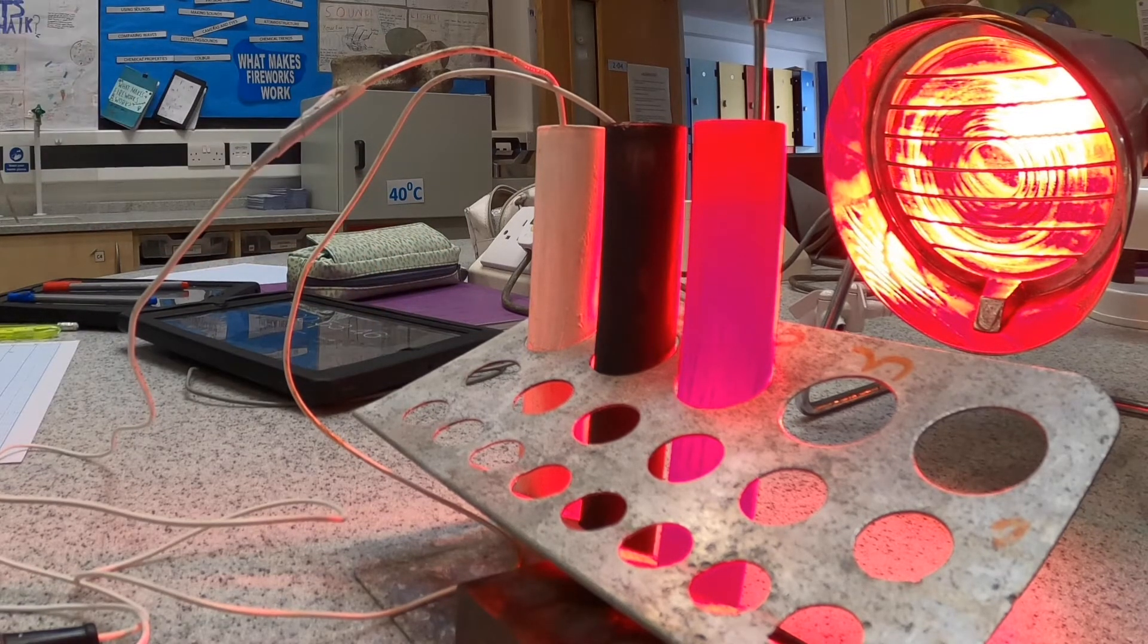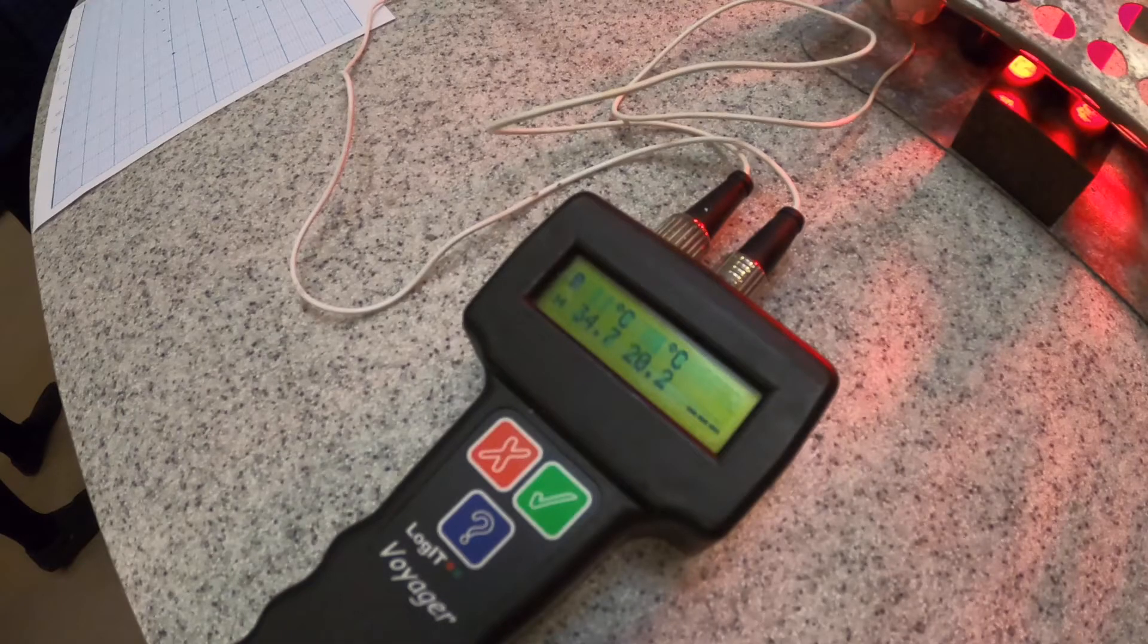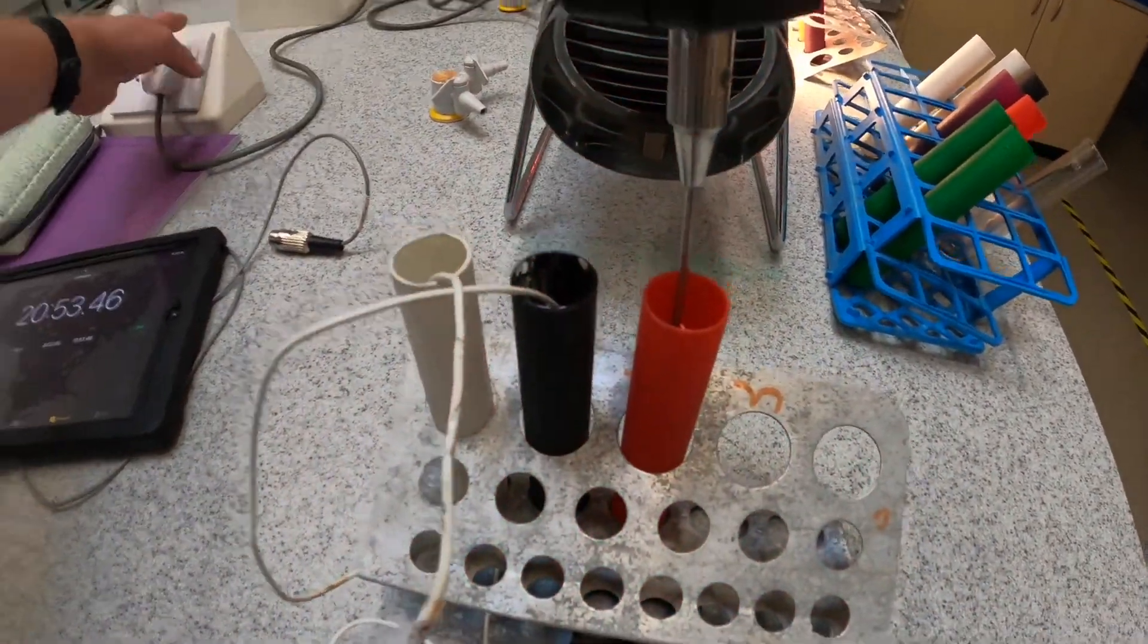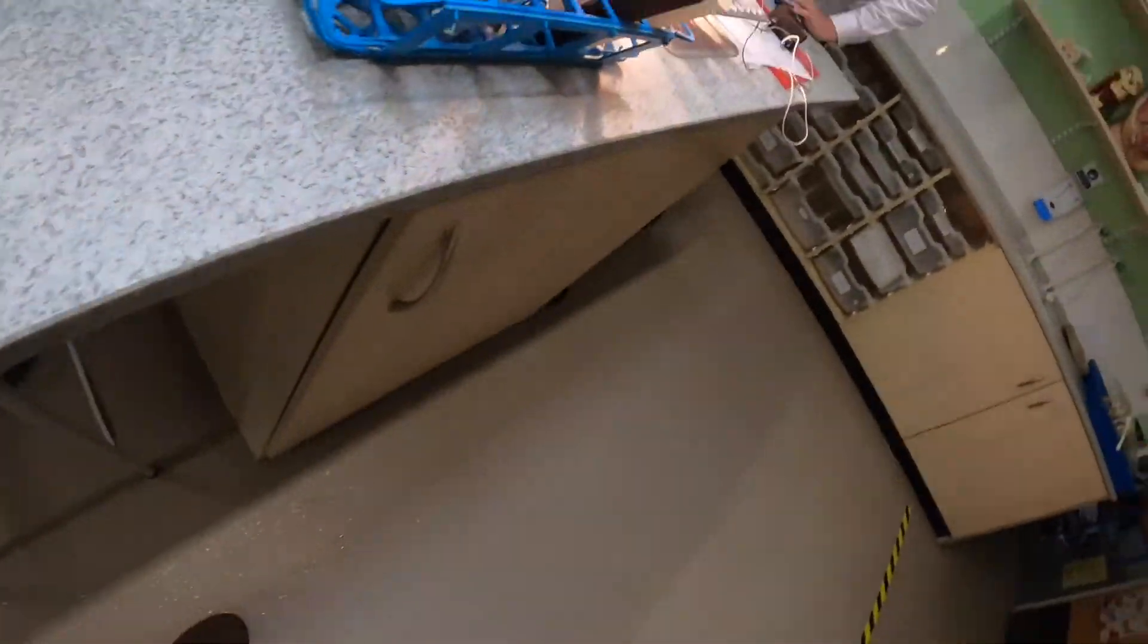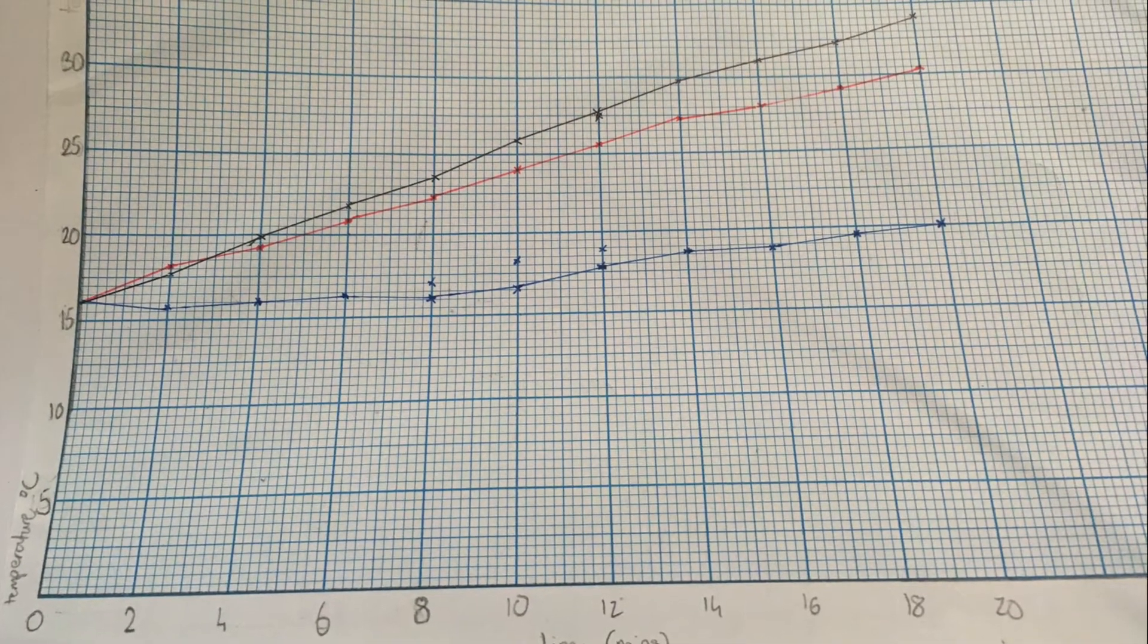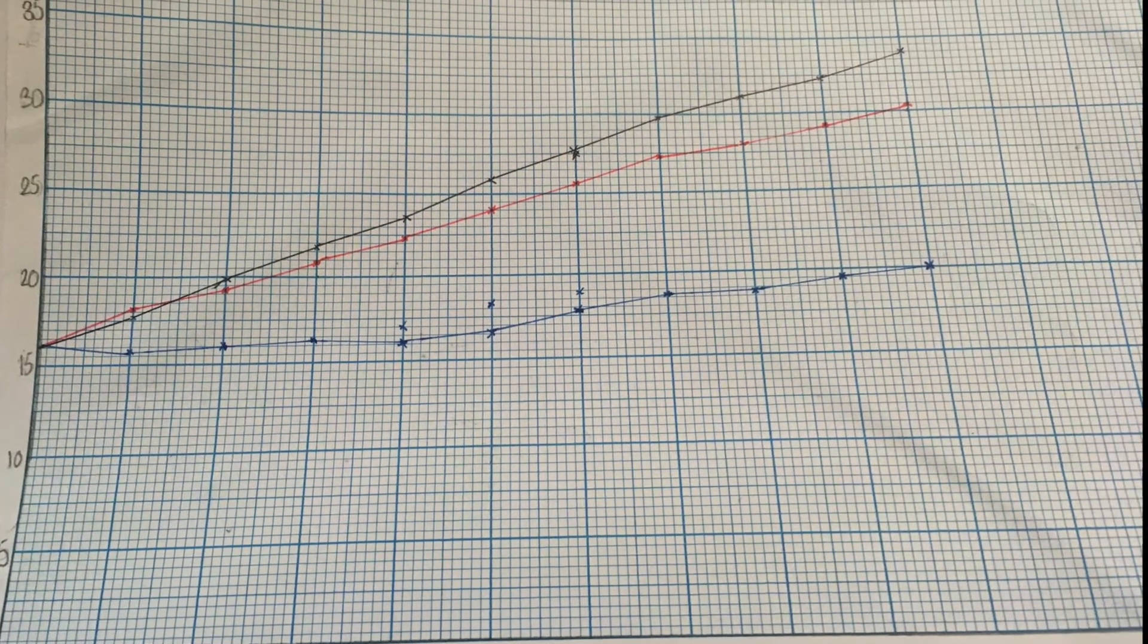So to finish off. So as you can see the black test tube went up to 34.7 degrees and the white one stayed at 20.2 degrees, and therefore the black test tube absorbed far more radiation from the same source, the same power, than the white one did.